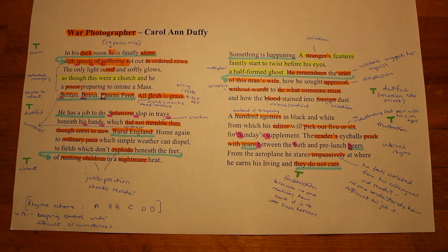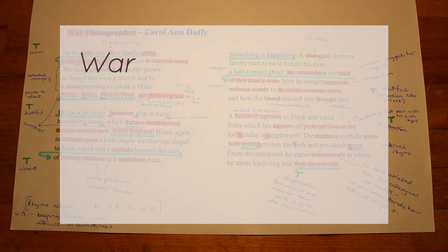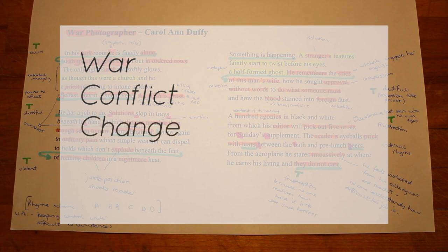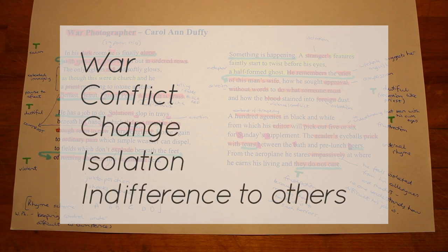Analyzing poetry involves identifying and dissecting the literary techniques that the poet has used effectively to explore the theme or themes of a poem. In her poem War Photographer, Carol Ann Duffy explores the themes of war, conflict, change, isolation, and indifference to others.